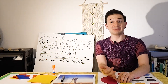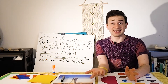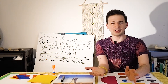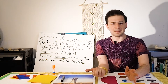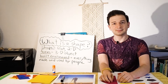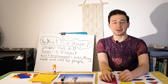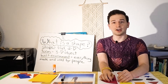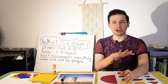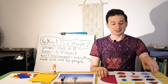The built environment just means everything that's around us that is made and used by people. Can you think of an example of something in the built environment — something that's made by people? The built environment could include the buildings that we live in, or bridges, or roads, or other structures. And all of these things around us are made out of different shapes.